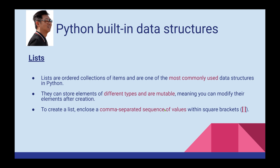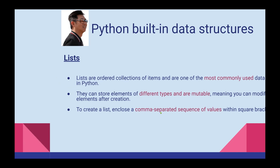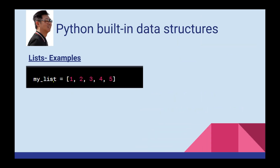Now let's talk about the data type. The keyword is mutable — the element is the type of data. To create a list, enclose a comma-separated sequence of values within square brackets. So you write the list in square brackets with comma-separated values.